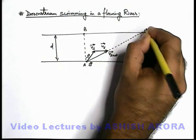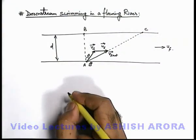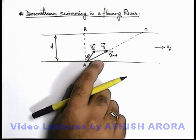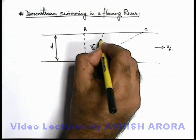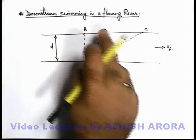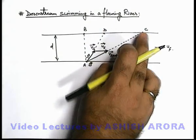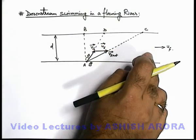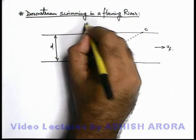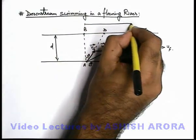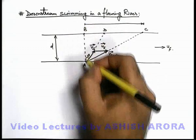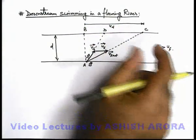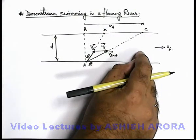The swimmer will finally move in this resultant direction and reach position C. As he jumps into the river in the downstream direction, rather than reaching point D where he is heading, he reaches point C which is further in the direction of river flow. The total drift with respect to point B — which is directly opposite the starting point A — is x_d, and the distance DC is the drift due solely to the river flow.